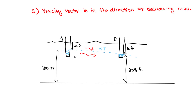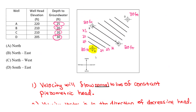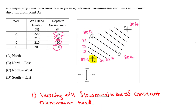So the velocity vector is perpendicular to the equipotential lines and points in the direction from A toward D — which is to the northeast. Therefore, the answer is B — northeast. That's all for this one. Take care and please subscribe and like.